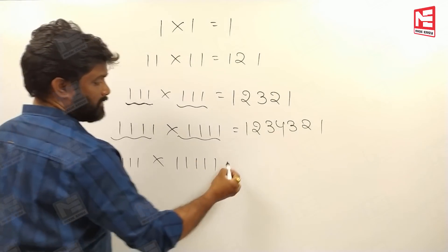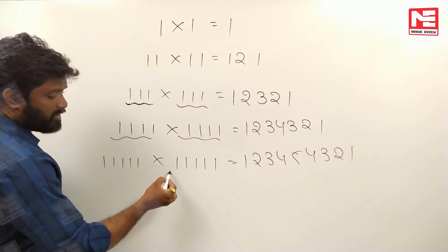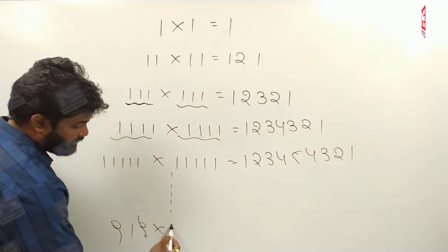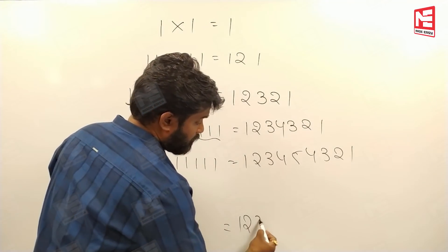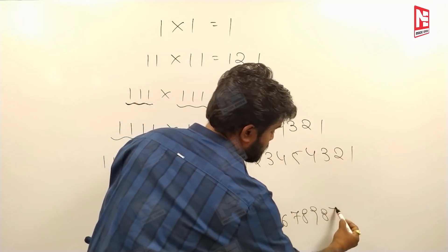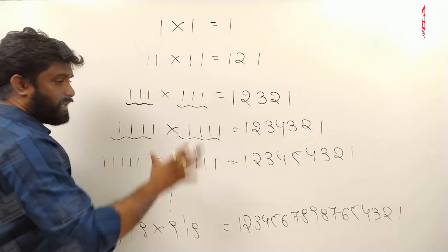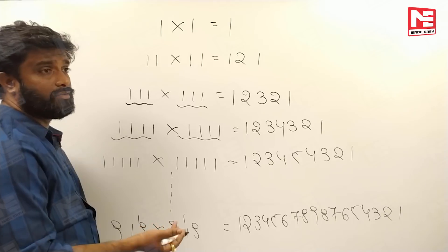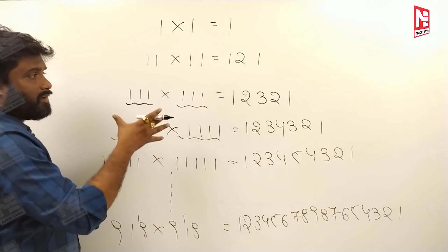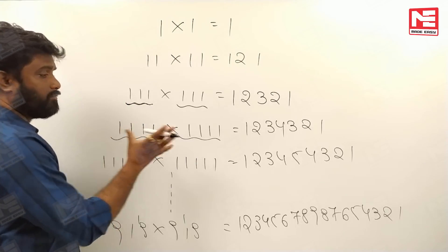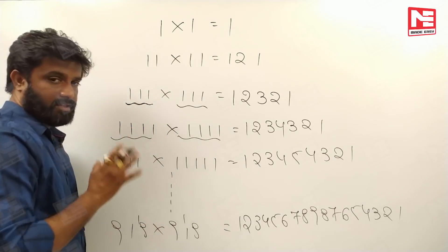For 5 ones into 5 ones: 1, 2, 3, 4, 5, 4, 3, 2, 1. This pyramid pattern is valid only up to 9 ones into 9 ones, giving 12345678987654321. Beyond that — from 10 ones into 10 ones — carry forwards appear and disturb the pyramid pattern.